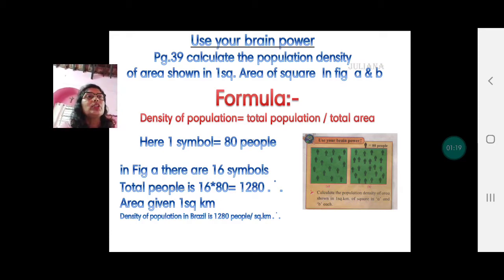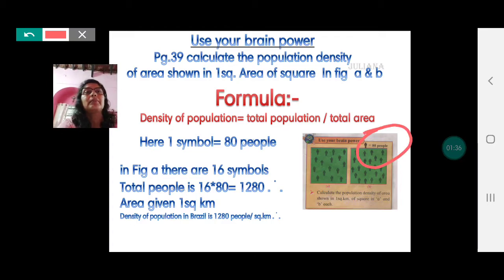What you need to keep in mind is the symbol that is used here. The symbol used is 1 person equals 80 people. So each symbol, you need to count the number of symbols very carefully, otherwise if you add 1 or write 1 less, your entire calculation can go wrong. Count the people with the help of a pencil, it will be easier for you to strike out as you count.